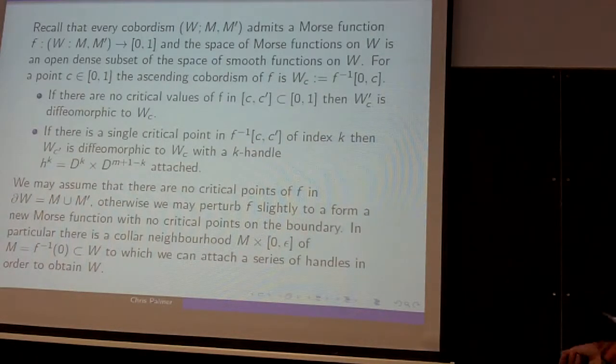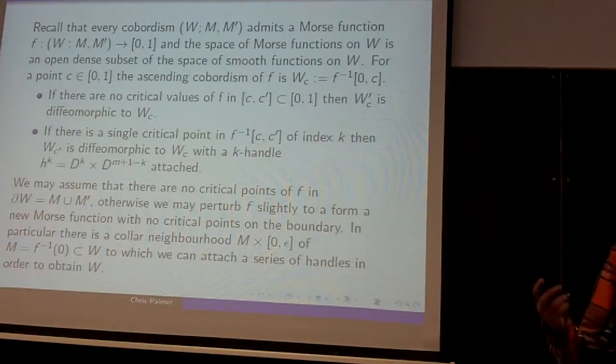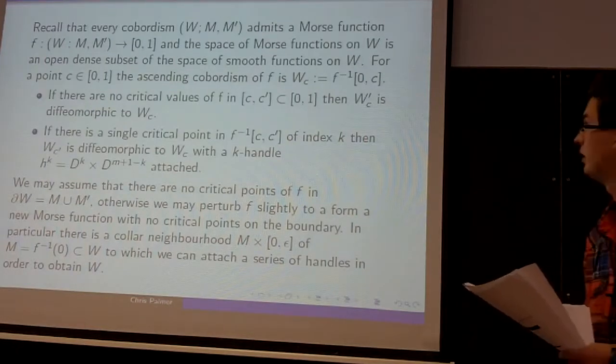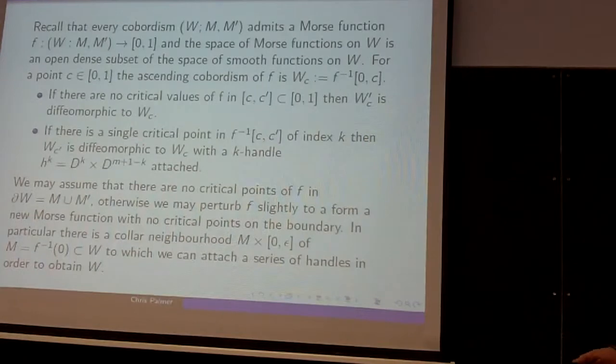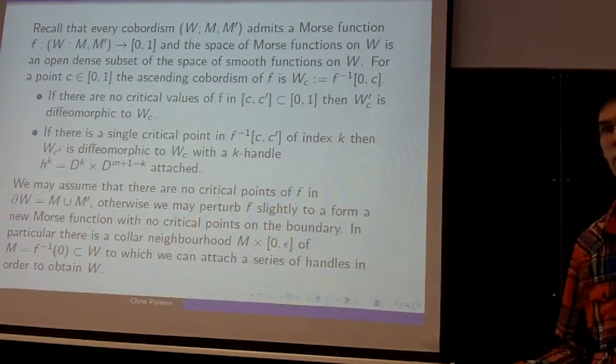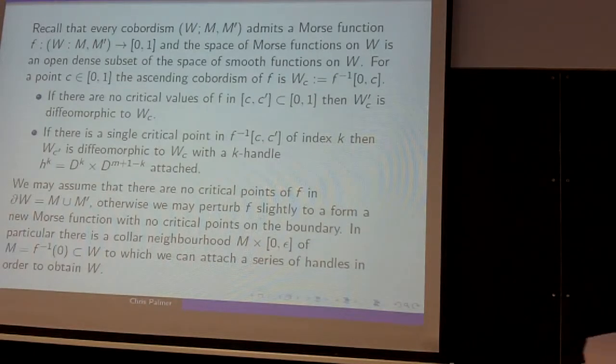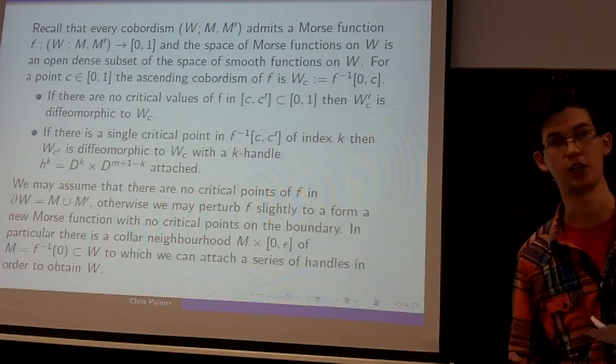And it has some nice properties. If there are no critical values of F in some closed interval [C, C'], that is there's no critical points in the pre-image, then you can look at the gradient vector field of F and integrate that to show that W_{C'} is diffeomorphic to W_C. And so the remaining case is, what happens when you pass over some critical point where the critical point is of index k, then you can show that diffeomorphically you're attaching a k-handle.